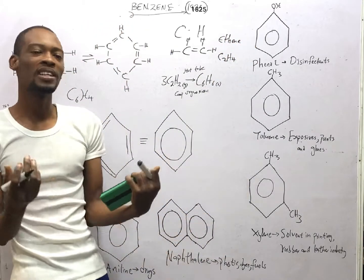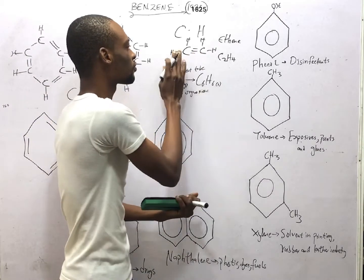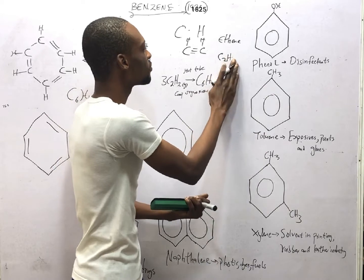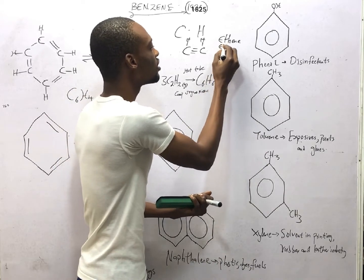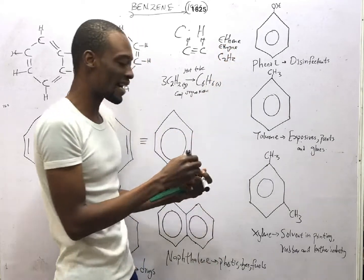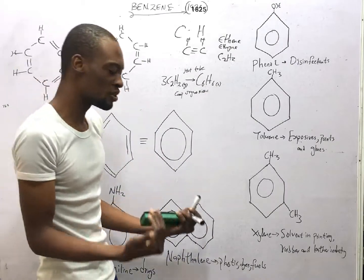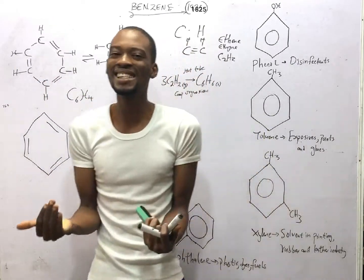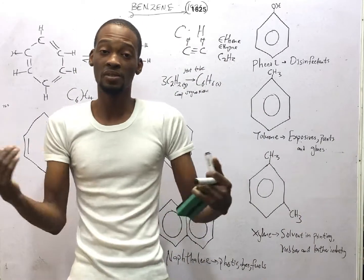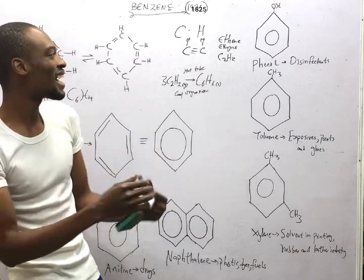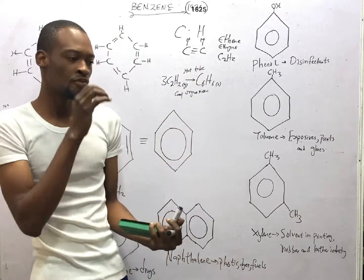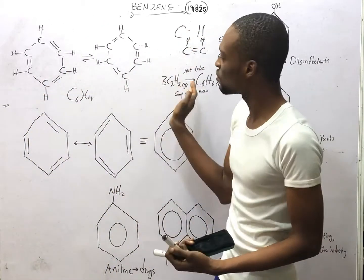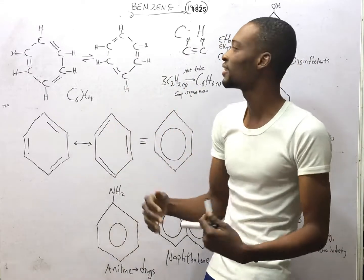Hydrocarbons can also have triple bonds. If that is the case, this becomes C2H2. So alkanes are saturated — they have single carbon-to-carbon bonds. Alkenes are unsaturated and contain double bonds, and alkynes contain triple bonds. These are aliphatic hydrocarbons; they can be cyclic as well or acyclic.